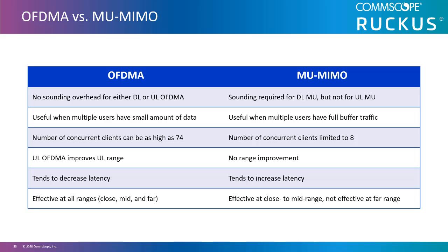Range improvement: With OFDMA, I can improve range because of power spectrum density. We will talk more about spectrum density next, allowing us to better understand OFDMA's ability to concentrate power. Multi-user MIMO does not offer range improvements. OFDMA tends to decrease latency while multi-user MIMO increases latency. OFDMA is effective at all ranges because of its long OFDMA symbol, while multi-user MIMO is only effective at close to mid-range, so it's not good for long-range deployments.